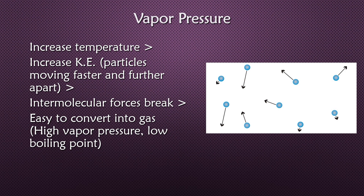Conversely, a liquid with strong intermolecular forces will have higher boiling points because we need much more temperature to convert it into a gas. These liquids also have low vapor pressures because it takes longer to convert them into gases. That's it for this topic — see you in the next one.